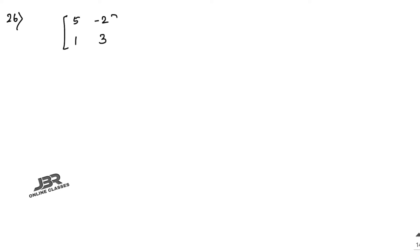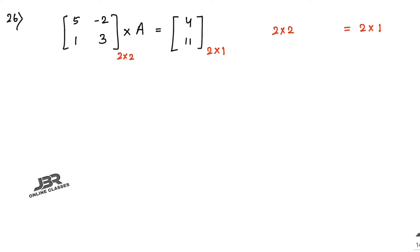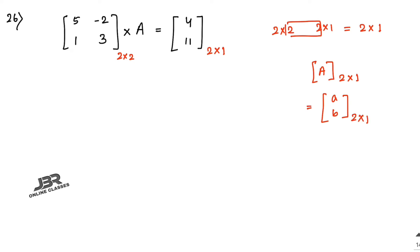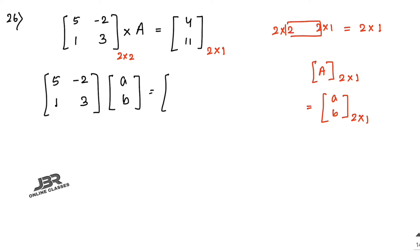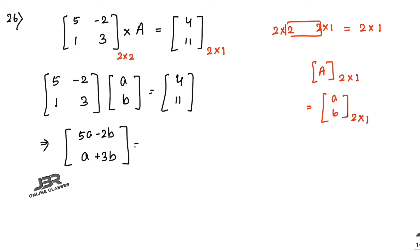Now sum number 26: [5,-2; 1,3] multiplied by matrix A equals [4; 11]. Let A be the 2×1 matrix [a; b]. Multiplying: the first element is 5a minus 2b and the second is a plus 3b, equal to [4; 11].